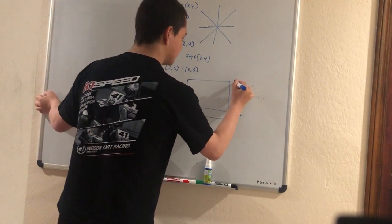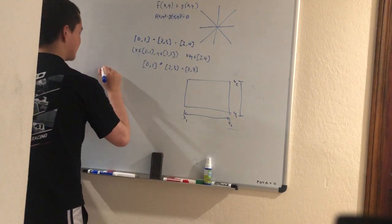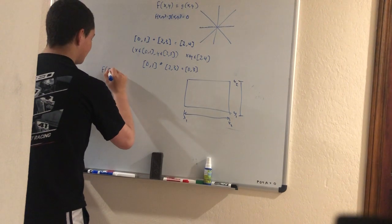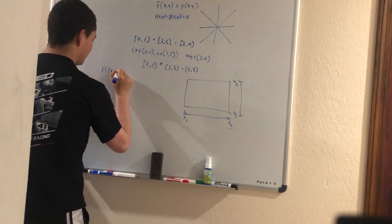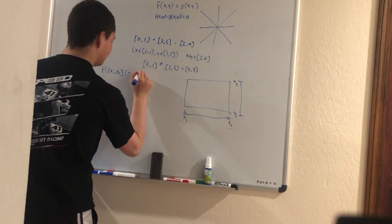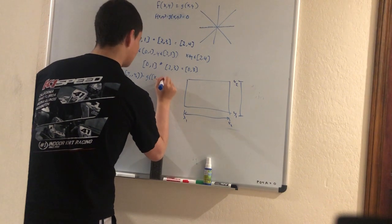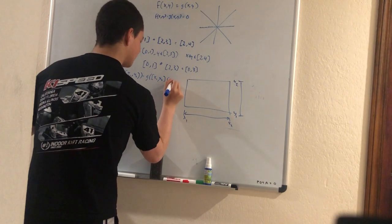So, we evaluate f(x1, x2, y1, y2) minus g(x1, x2, y1, y2).